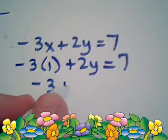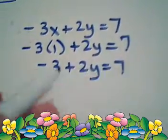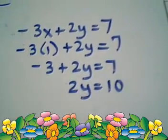When I add 3 to both sides, 2y is equal to 10. And when I divide both sides by 2, y is equal to 5.